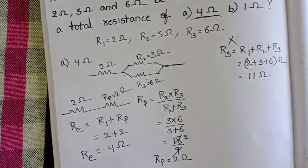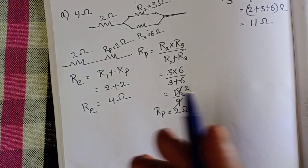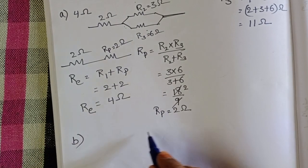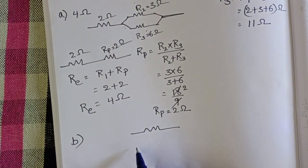And second, we want 1 ohm resistance. 1 ohm is less than the resistance of each resistor. So, connect the given three resistors in parallel.